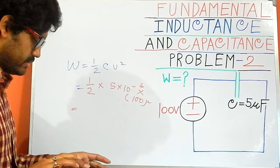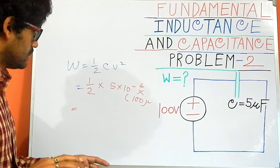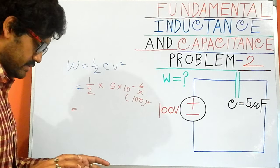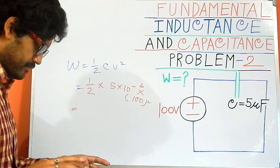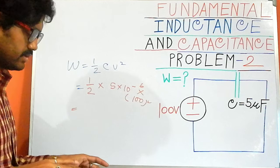Which is 2.5 multiplied with 10 power minus 6 times 100 squared, equals 0.025 Joules.